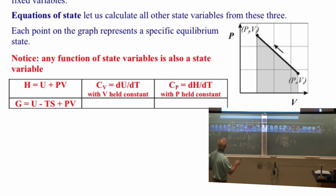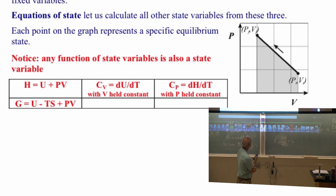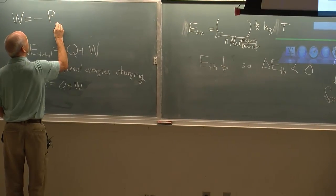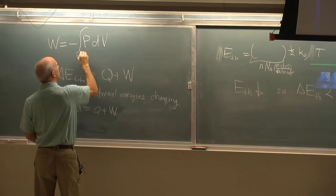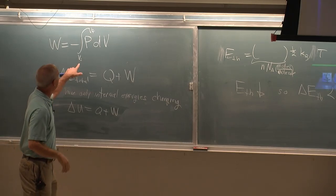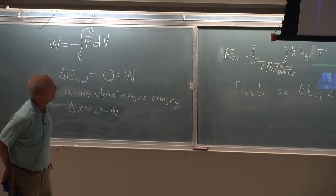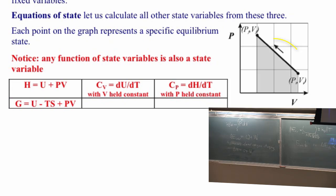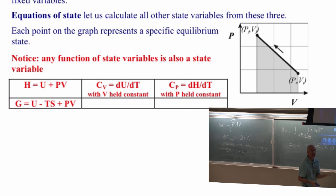And what I forgot to point out was the work can be calculated from this graph right here. And I'm not going to derive it for you. The work is the negative of the pressure integrated over the volume. P integrated over volume is just the area that's shaded here. The area underneath that graph.